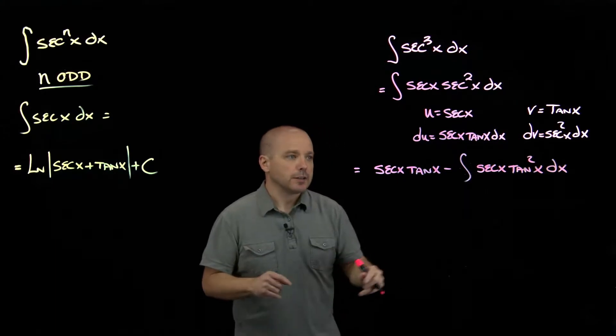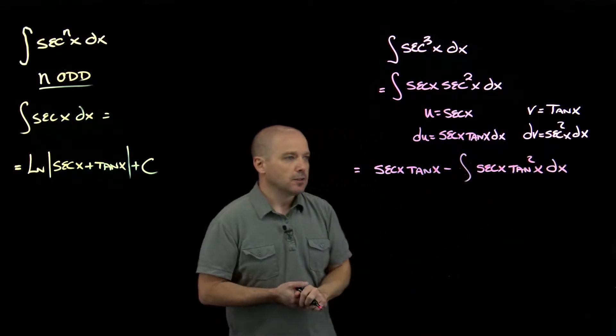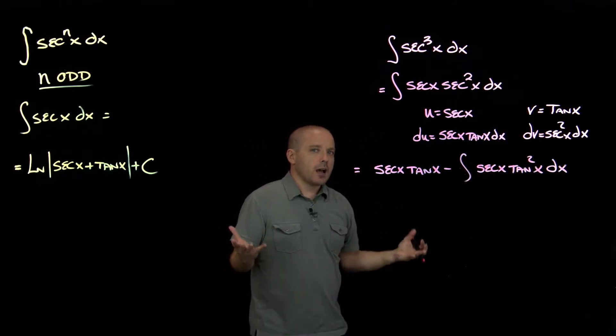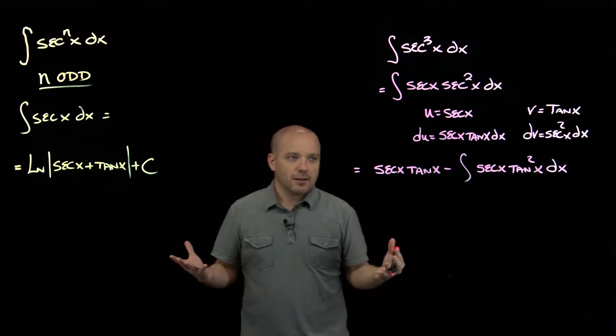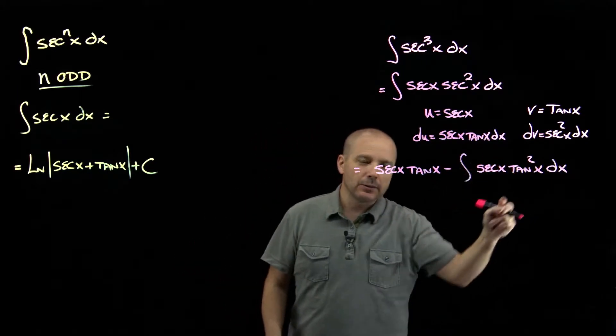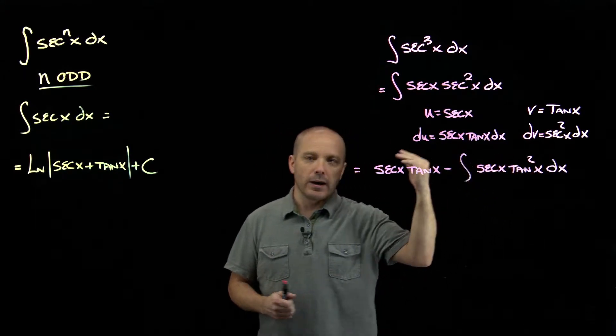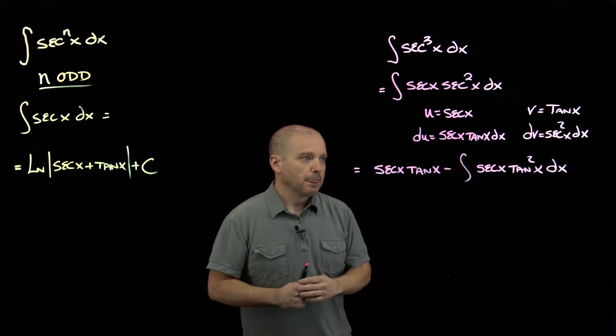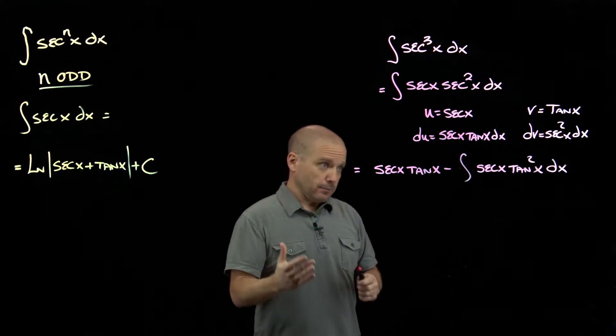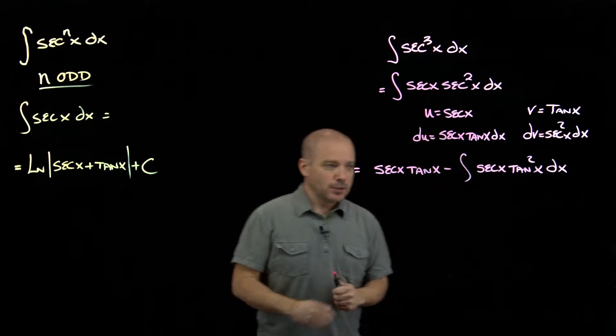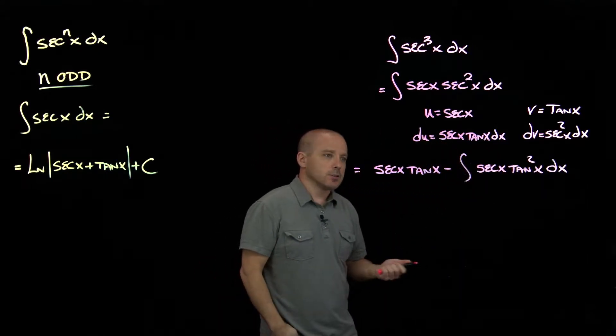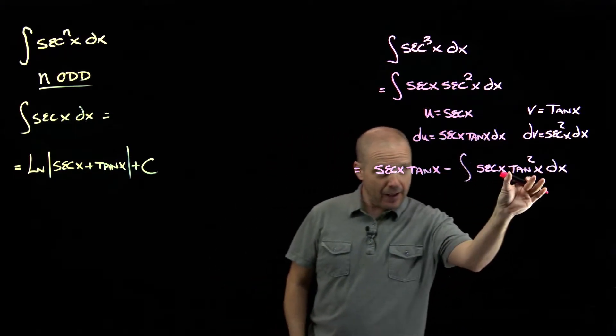So now we have an integral that does have a mix of secant and tangent. Unfortunately, it's not quite there yet. It almost looks like we could get away with a u-sub there, but the derivative of tangent is secant squared, we only have secant. The derivative of secant is secant tangent, we don't have its derivative either, so we're not quite there yet.